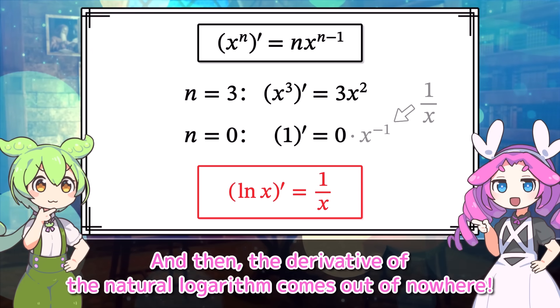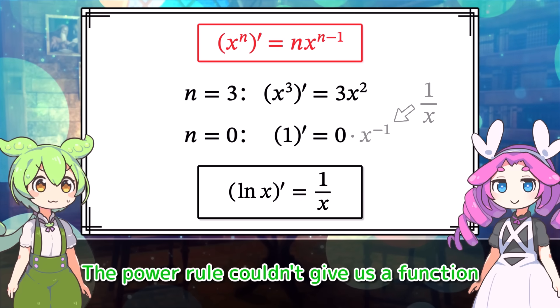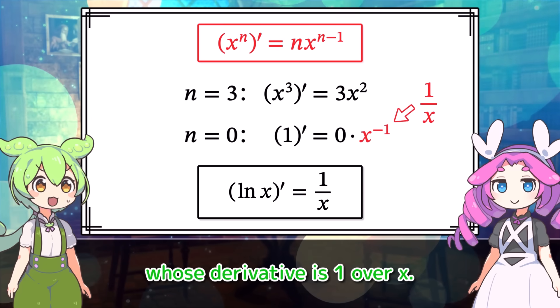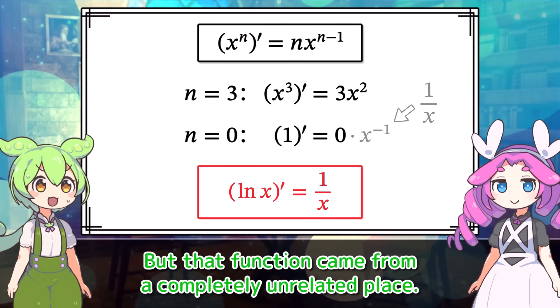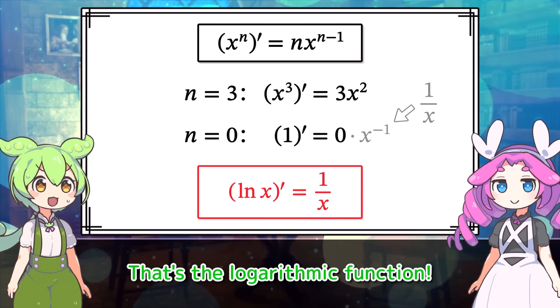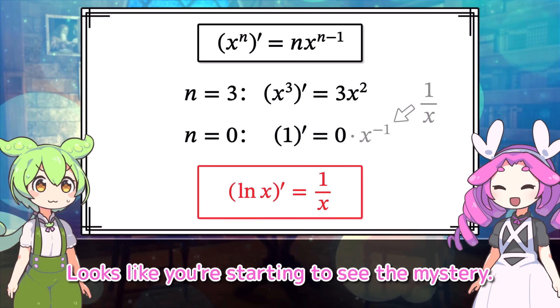And then the derivative of the natural logarithm comes out of nowhere. This is kind of weird. The power rule couldn't give us a function whose derivative is 1 over x. But that function came from a completely unrelated place. That's the logarithmic function. Looks like you're starting to see the mystery.